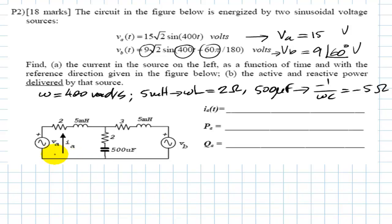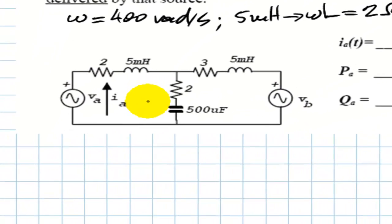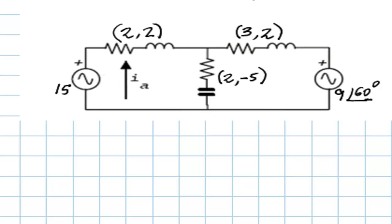Now we redraw the circuit in the phasor domain. I have combined the impedance of the resistor and the inductor in this complex impedance 2+j2, the same here and the same in this branch. The sources are represented by their phasors: 15 volts with 0 degrees and 9 volts with 60 degrees. Reference node, node number 1, and branch currents are chosen.